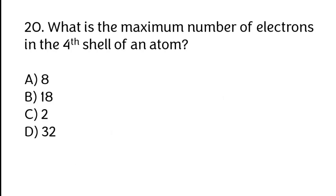What is the maximum number of electrons in the fourth shell of an atom? Correct answer is D. 32.